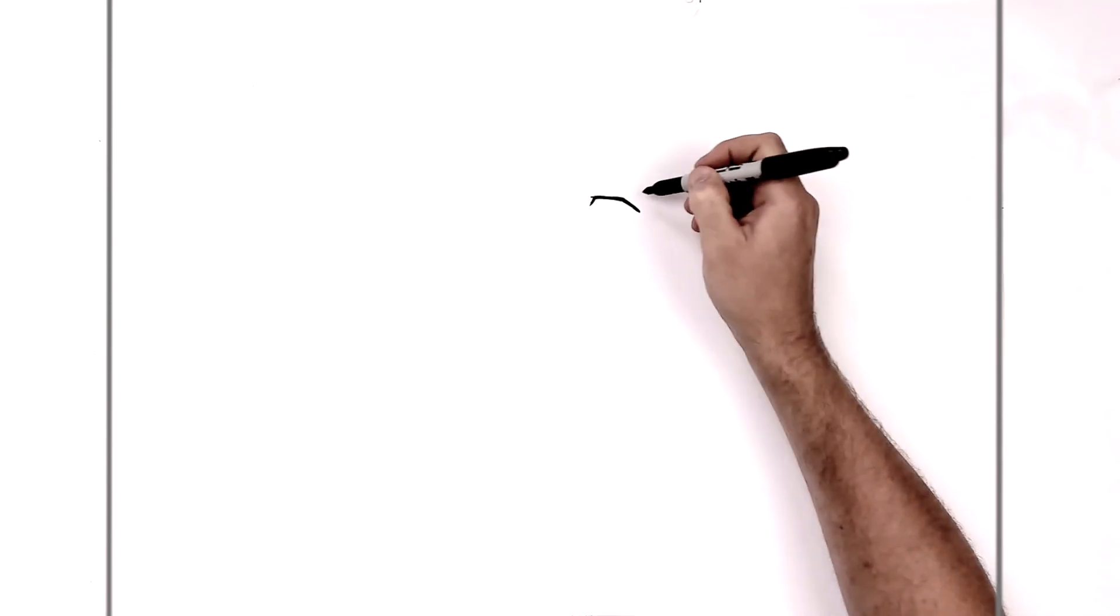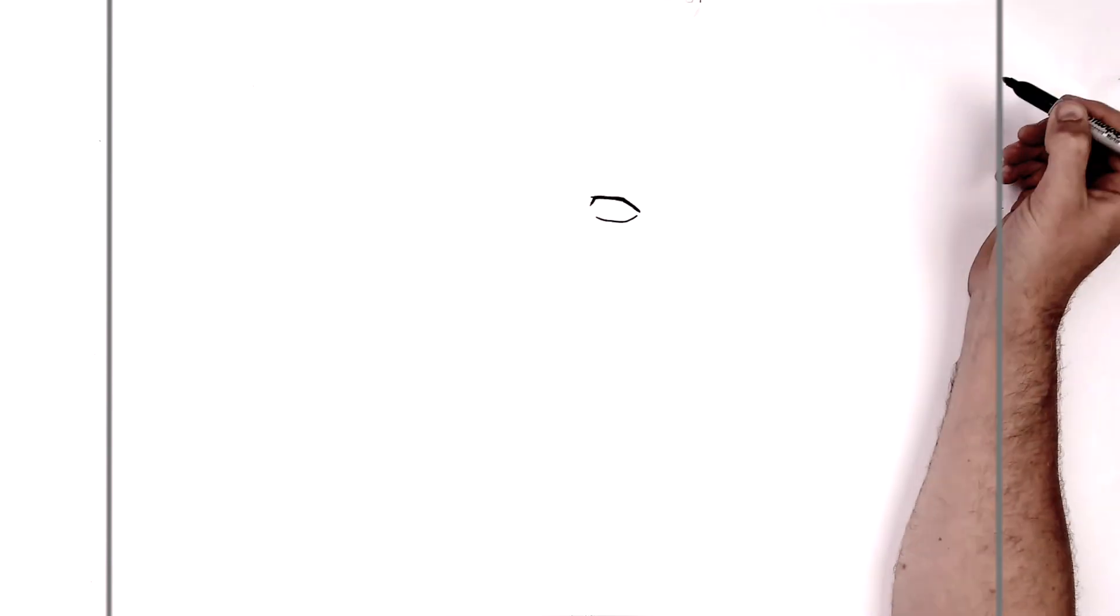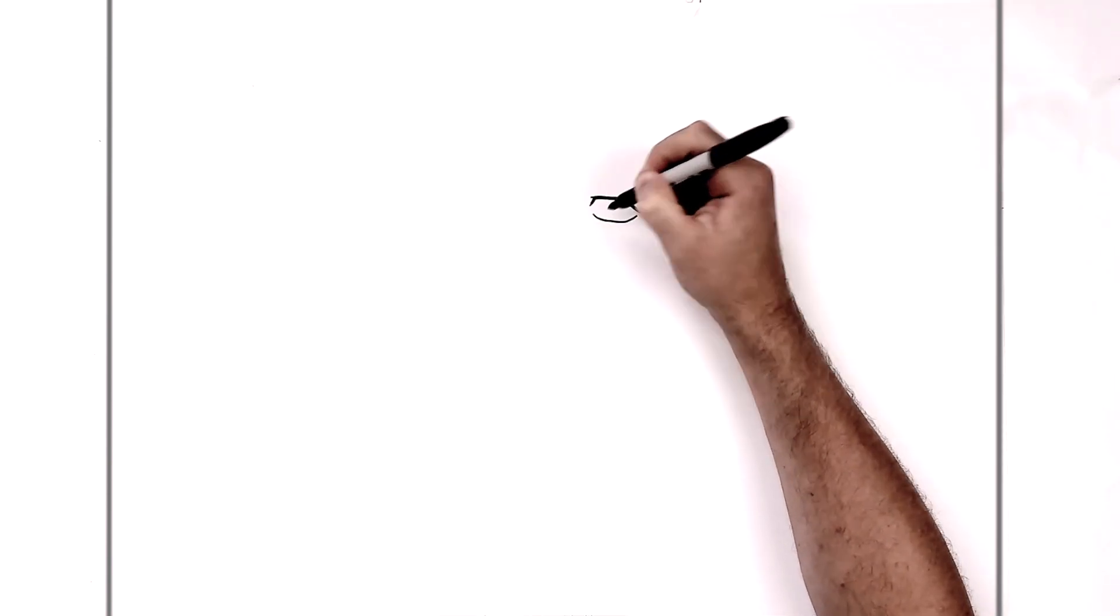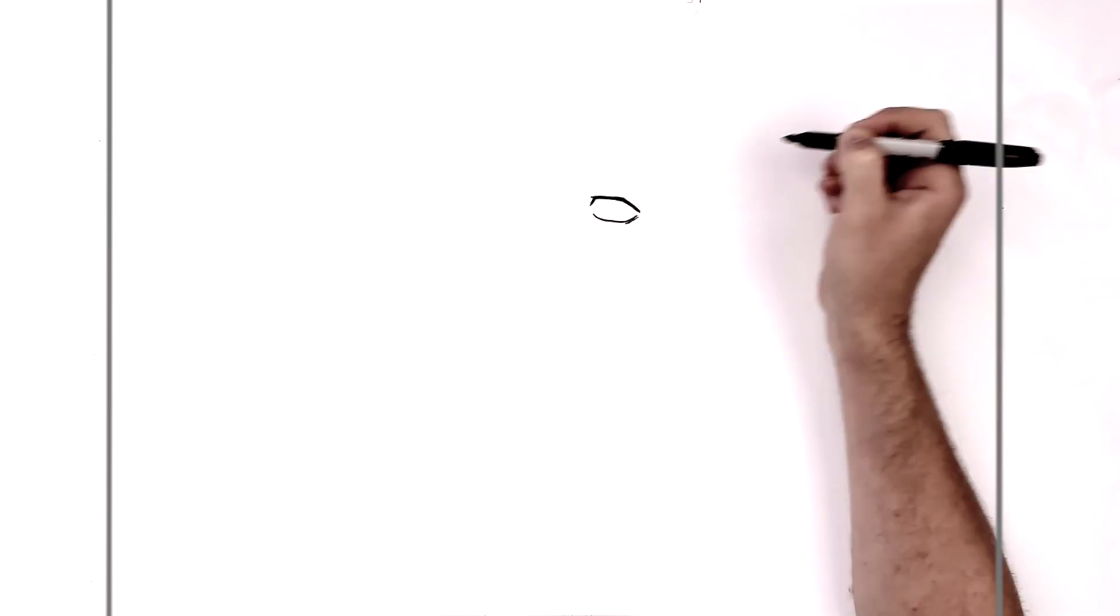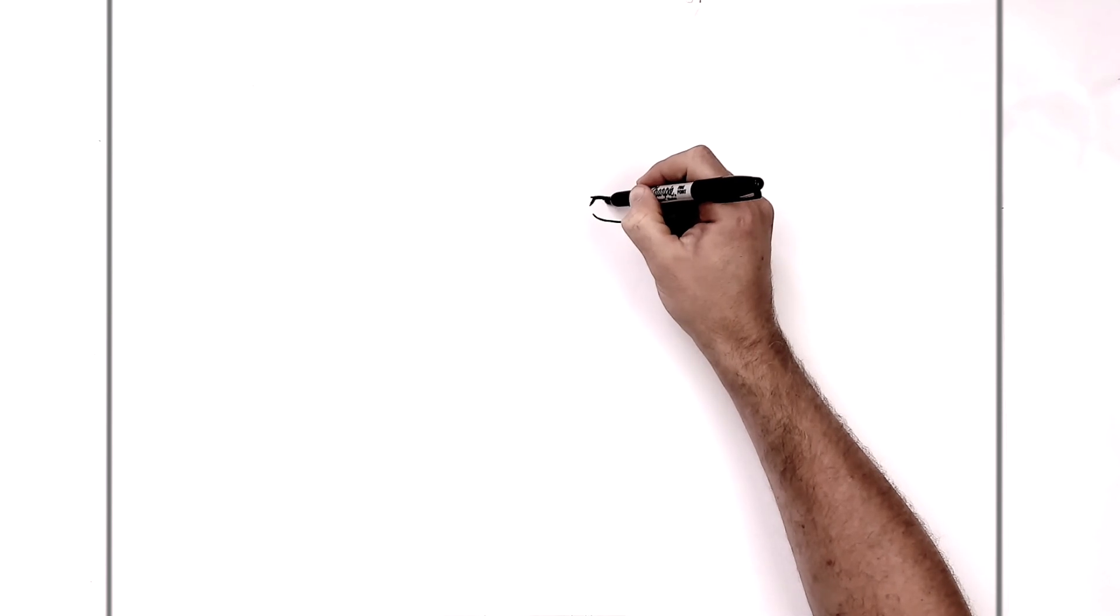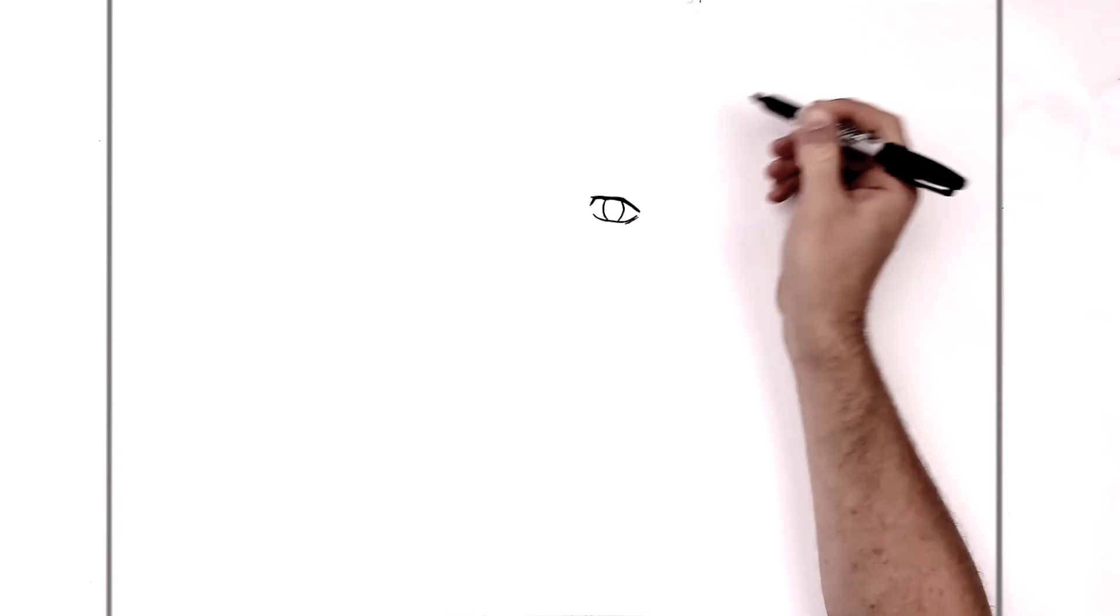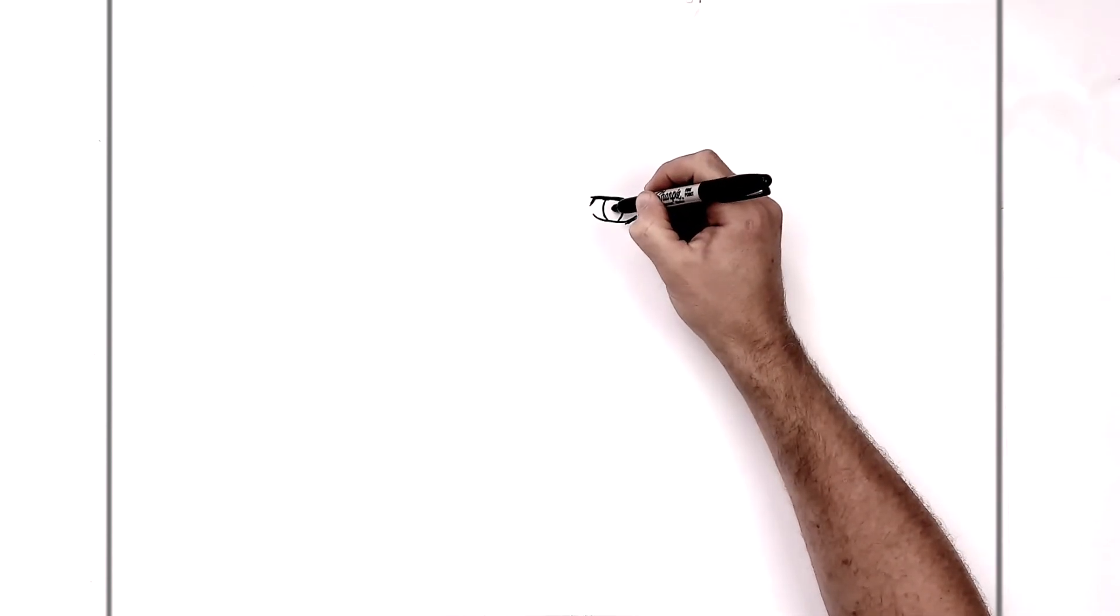And then the bottom eyelid. So we'll just come down around. There. Maybe come a bit closer just to here. And then he has a line just around the corner of his eye there. And then there's an iris and his pupil. So large iris like so, and his pupil in the middle.